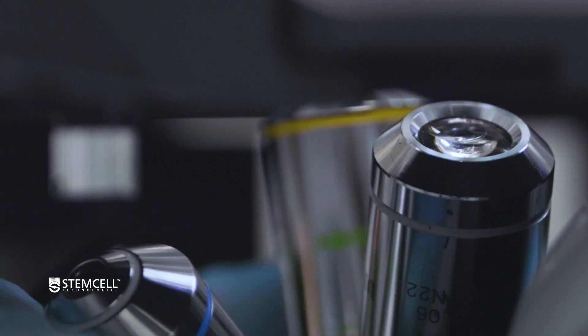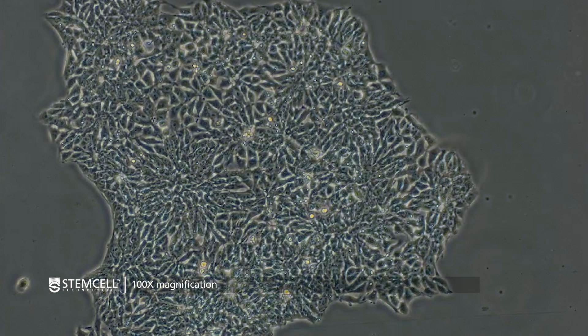At a higher magnification, it should become obvious if the colony contains differentiated cells. These cells will typically appear larger and less tightly packed than healthy cells in a colony.